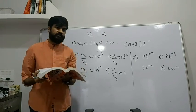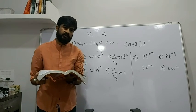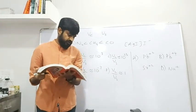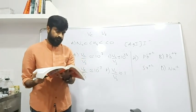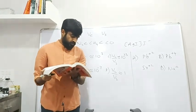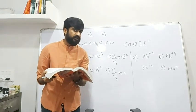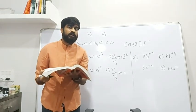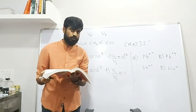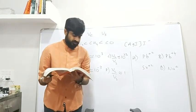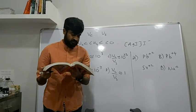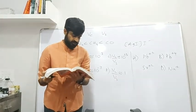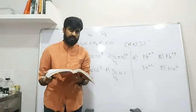Next question: An emulsifier is a substance which — Option A: stabilizes the emulsion. Option B: homogenizes the emulsion. Option C: coagulates the emulsion. Option D: accelerates the dispersion of liquid in liquid.